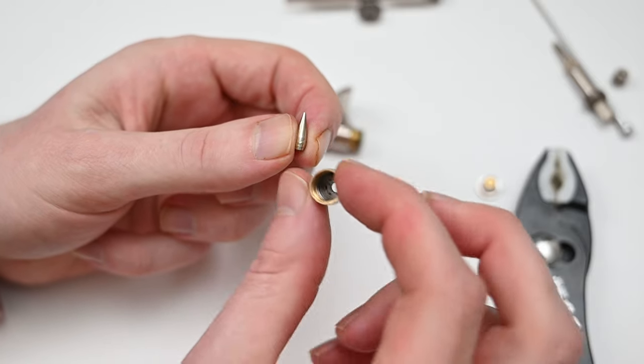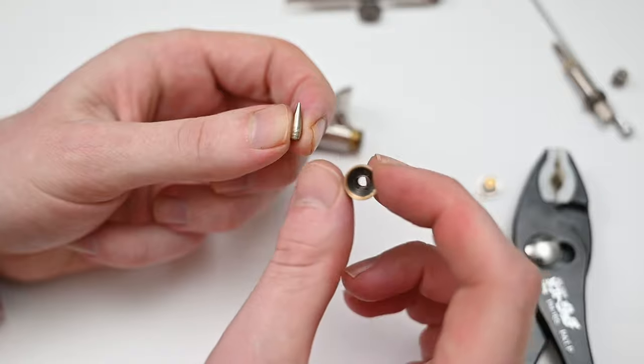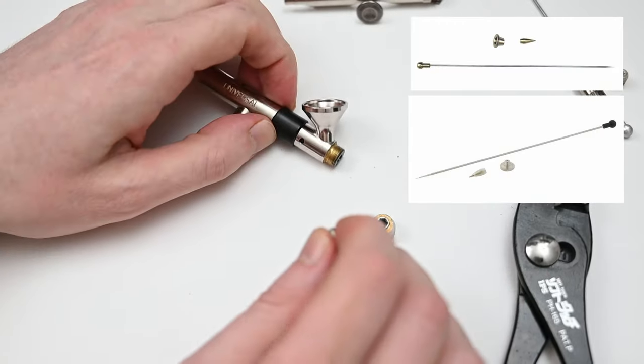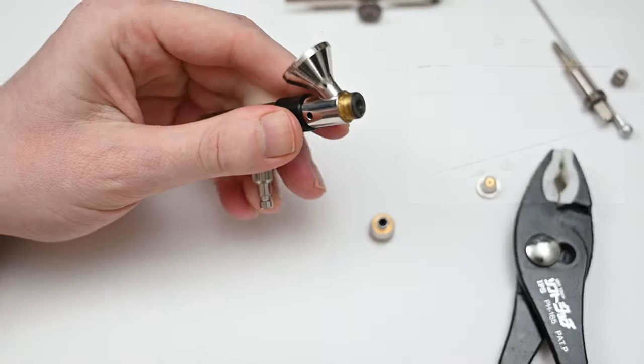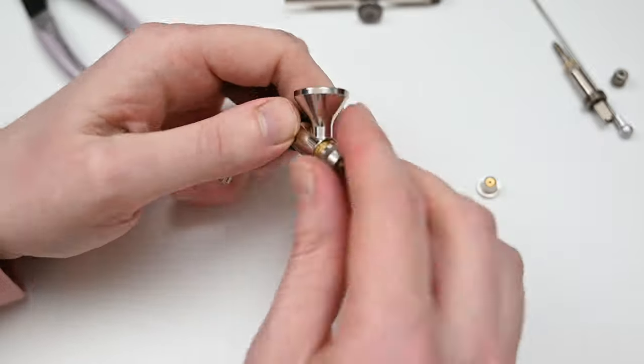Now, as I said earlier, this is the large nozzle size at 0.7 millimeters, but if you'd like, you could buy two kits that Badger sells for this. They also work on the Patriot 105, and that's the 0.5 millimeter and the 0.3. If you feel like this large nozzle puts out too much paint, it might be a good idea to switch to a smaller one.